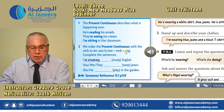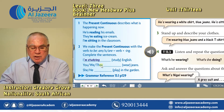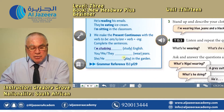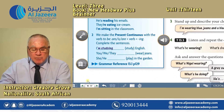Present continuous verbs end with -ing. So, complete these sentences: I'm studying English. You, we, they are wearing jeans. She or he is playing in the garden. Let's have a look at the grammar reference on page 129, 13.1.